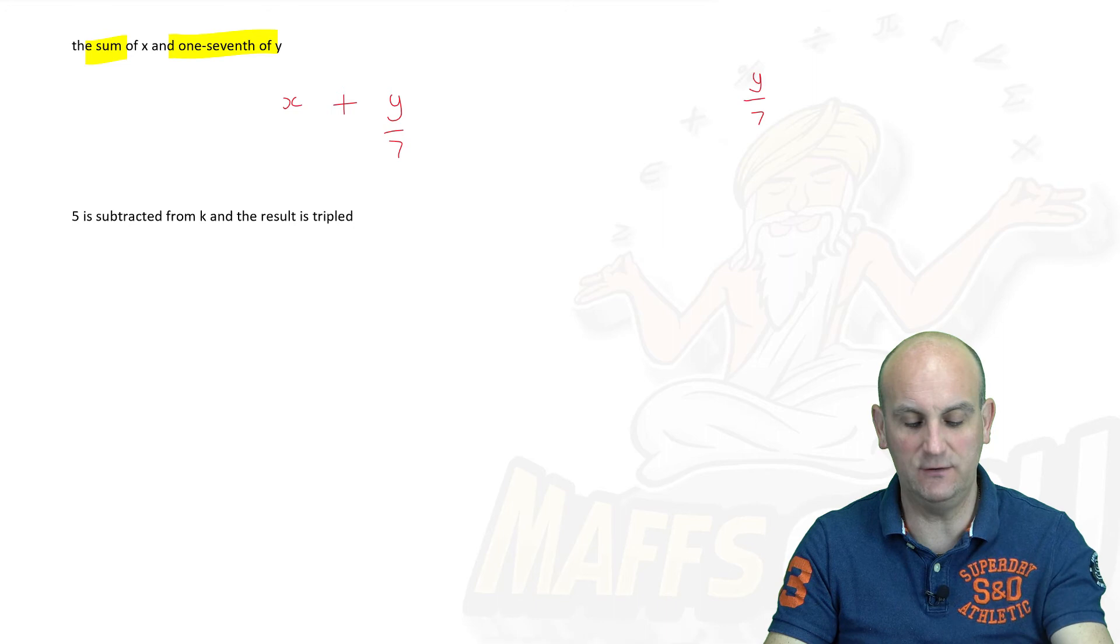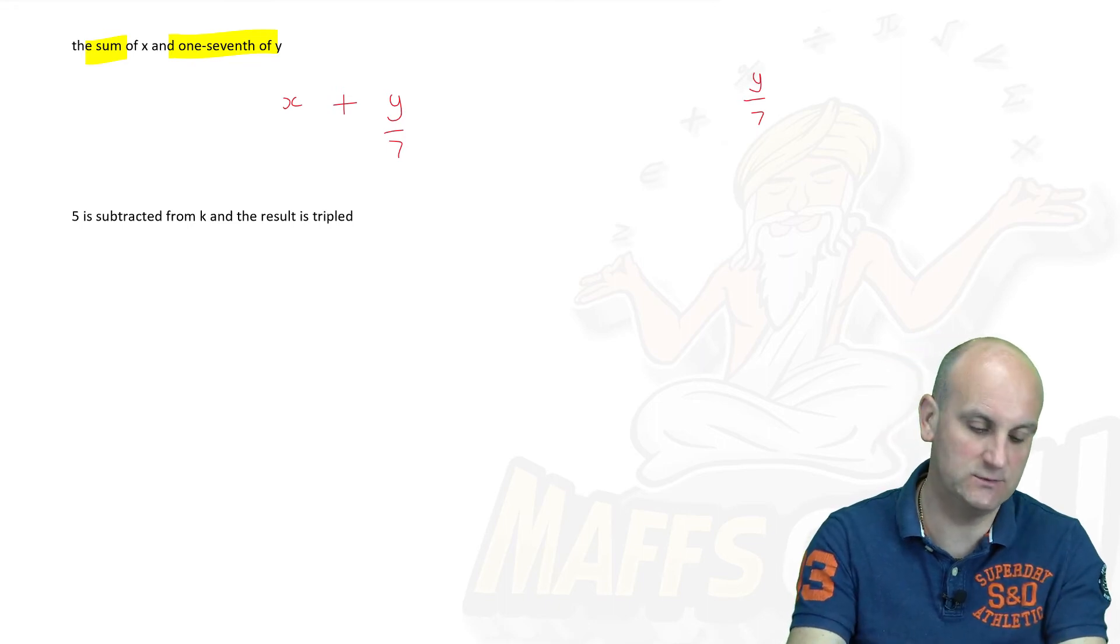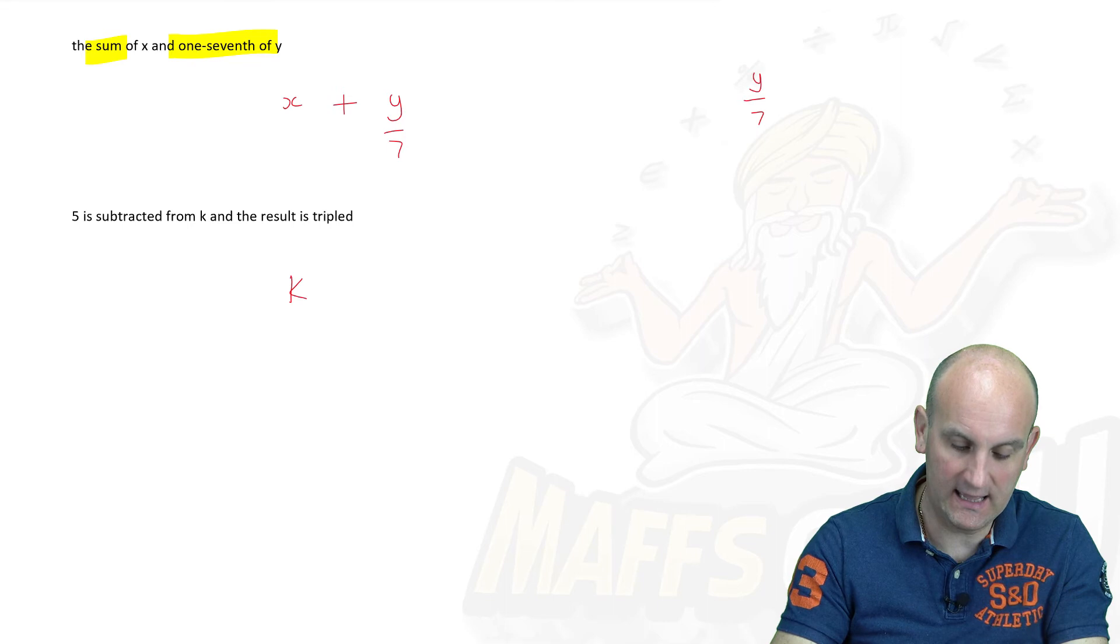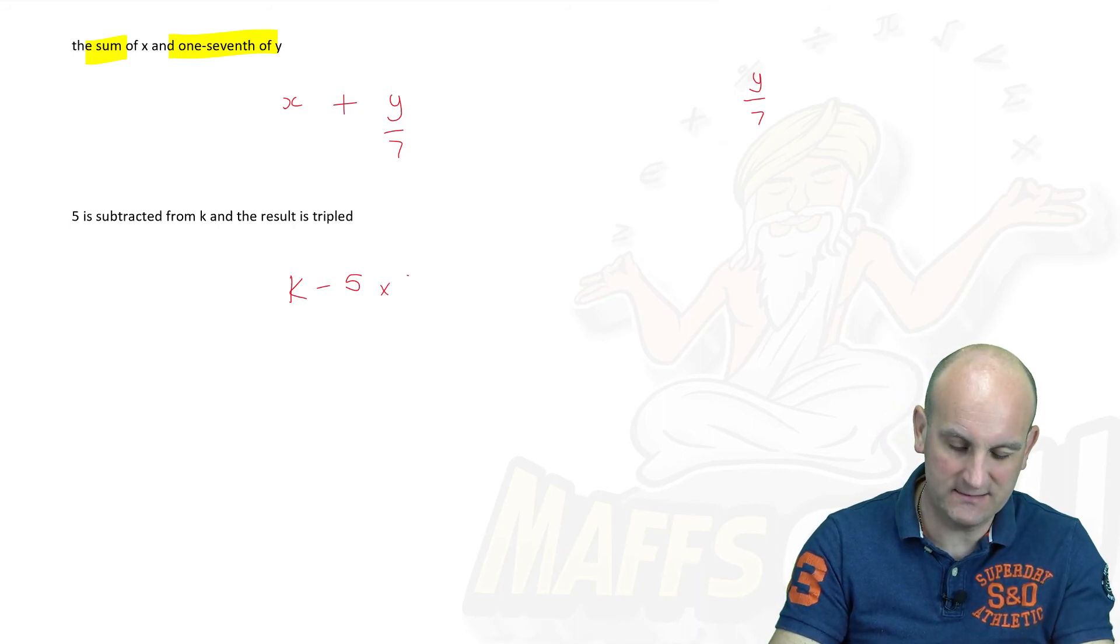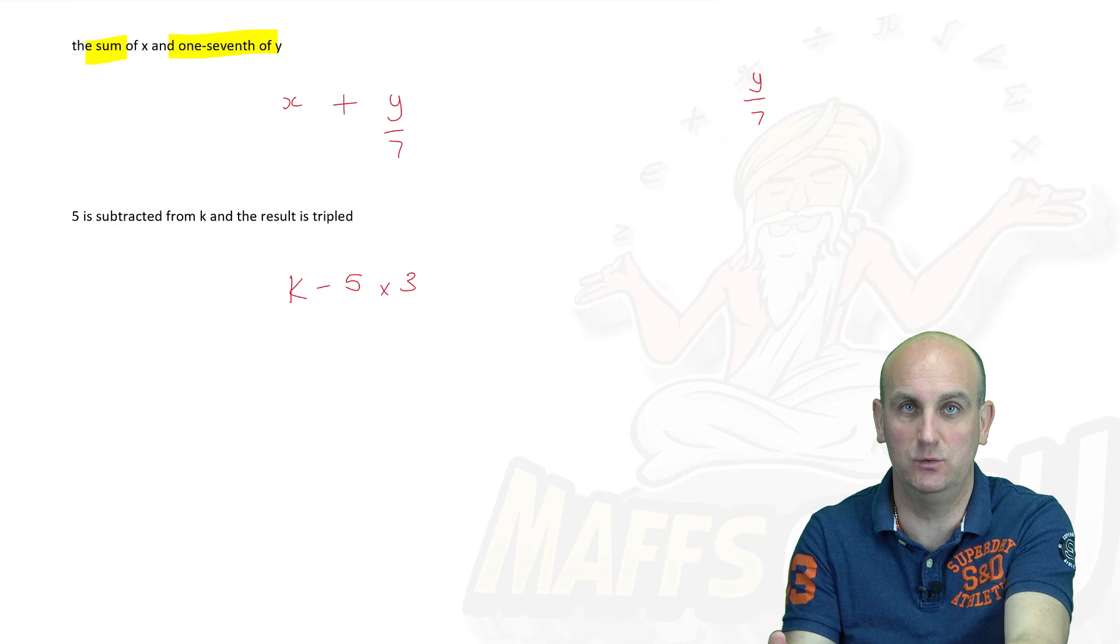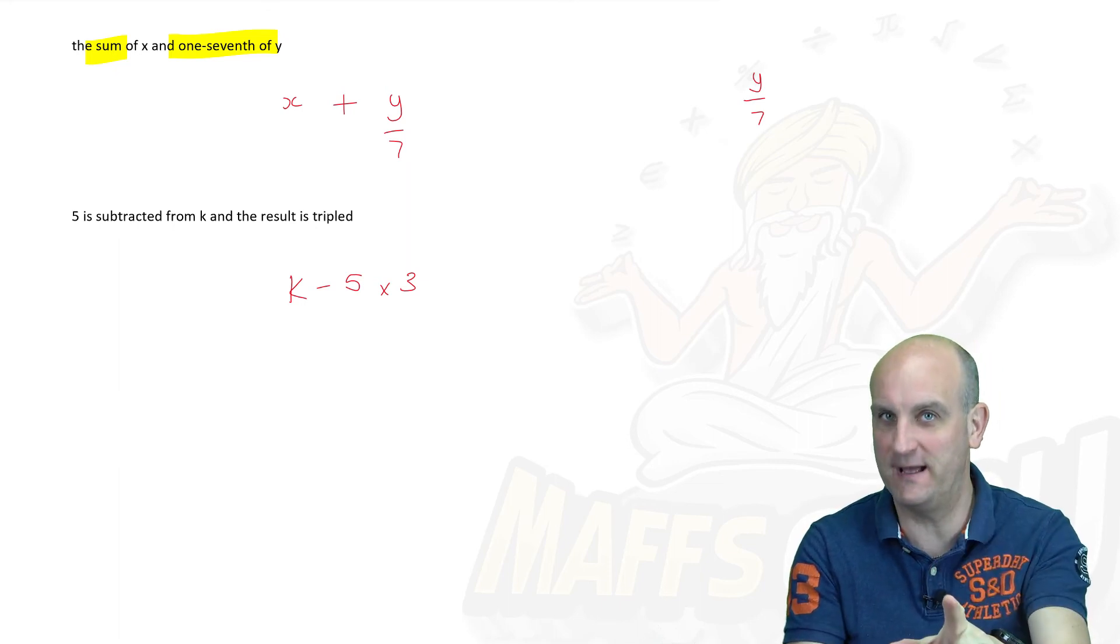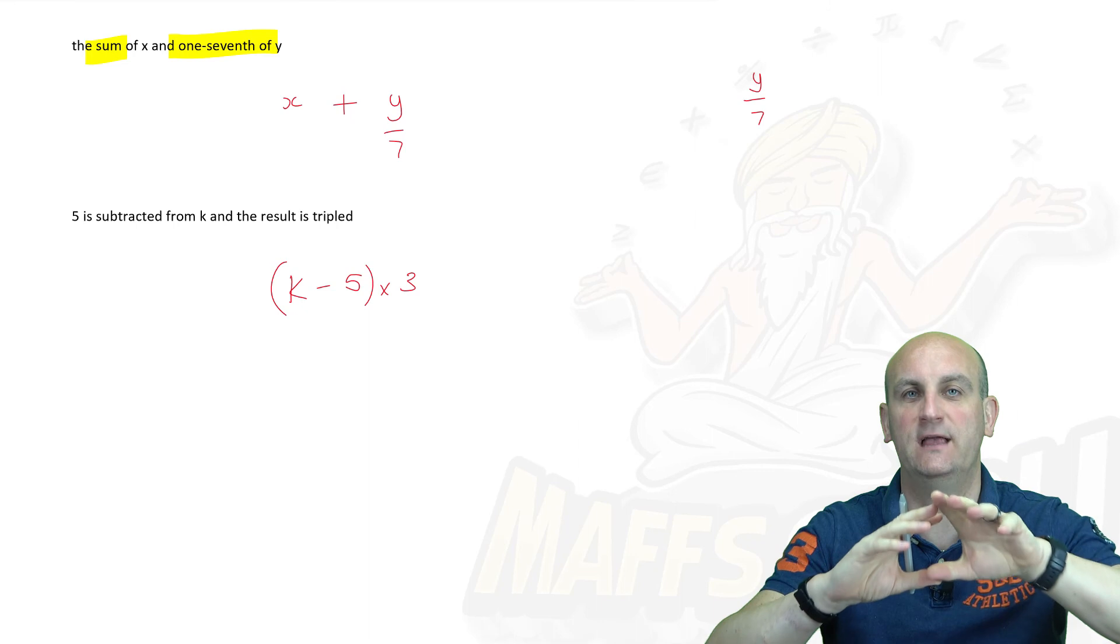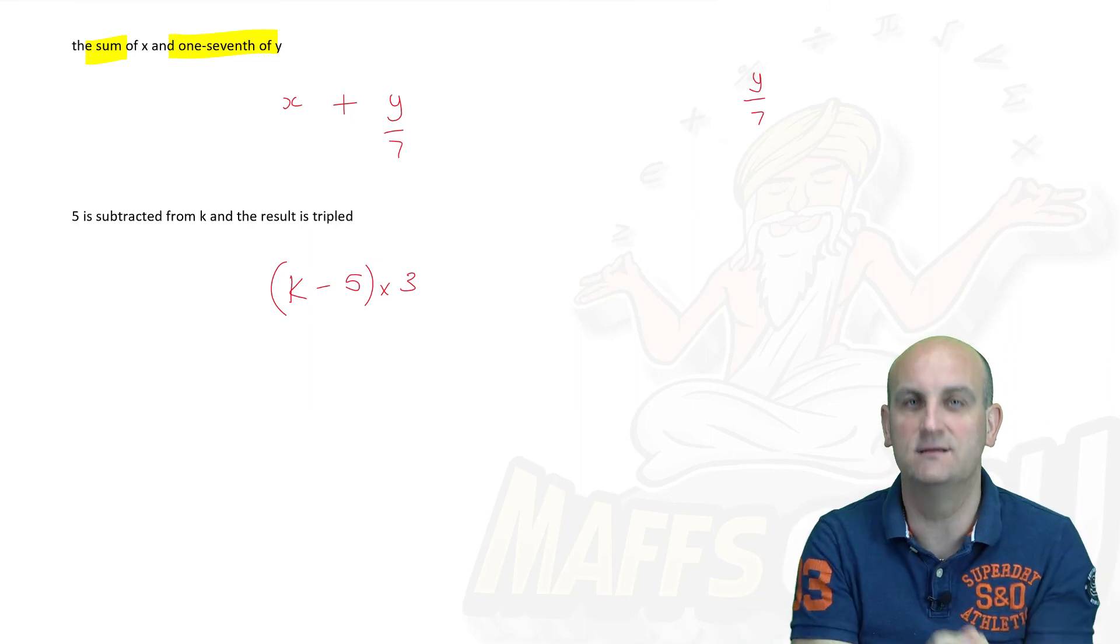And 5 is subtracted from K, and the result is then tripled. Let's do it in order. 5 is subtracted from K. From K tells me that K has to be the start. So I've got a K and I'm going to subtract 5. And the result is tripled. What a lot of people do is they go, that means times by 3. And sadly, that's not right. We've got more than one term that we're doing something to. And we have to group those terms. We have to say to the question, let's remember we've done this first. Go back to BIDMAS or BODMAS. Brackets tell us do this first. So by putting in a set of brackets here, it says do K take away 5. And then the result, brackets, is tripled.